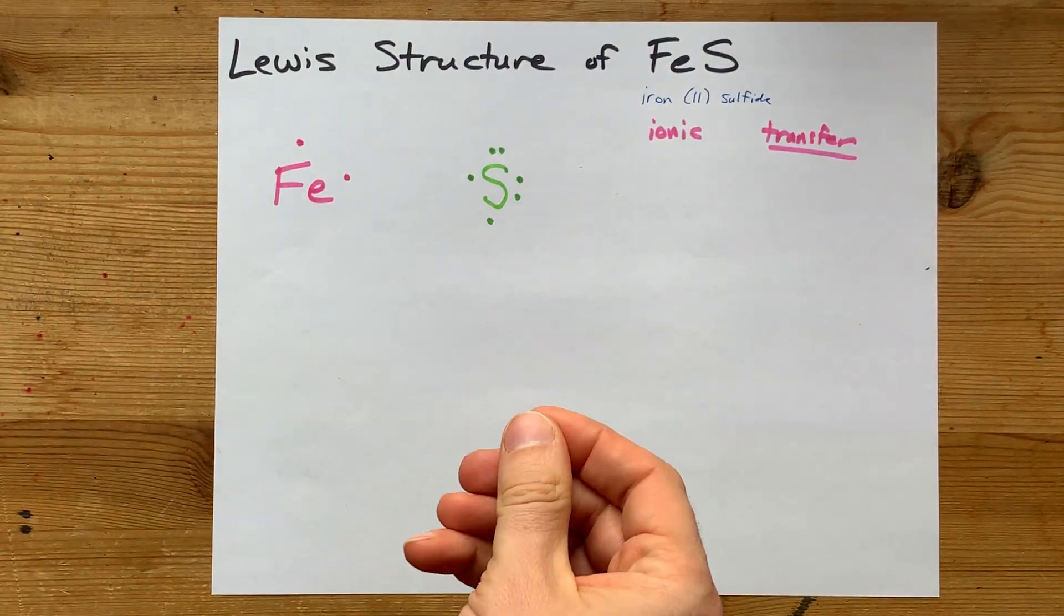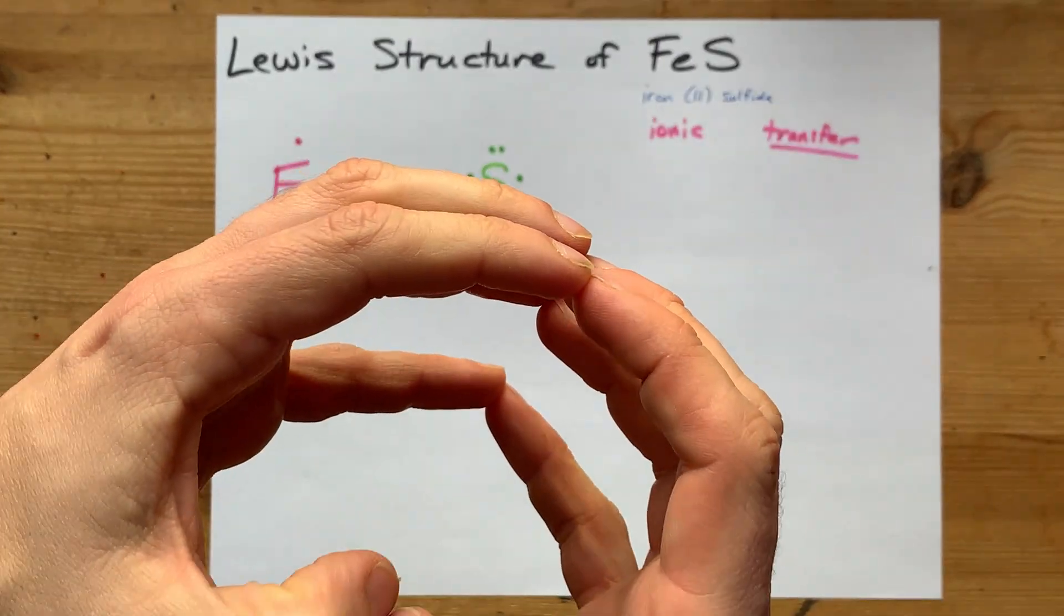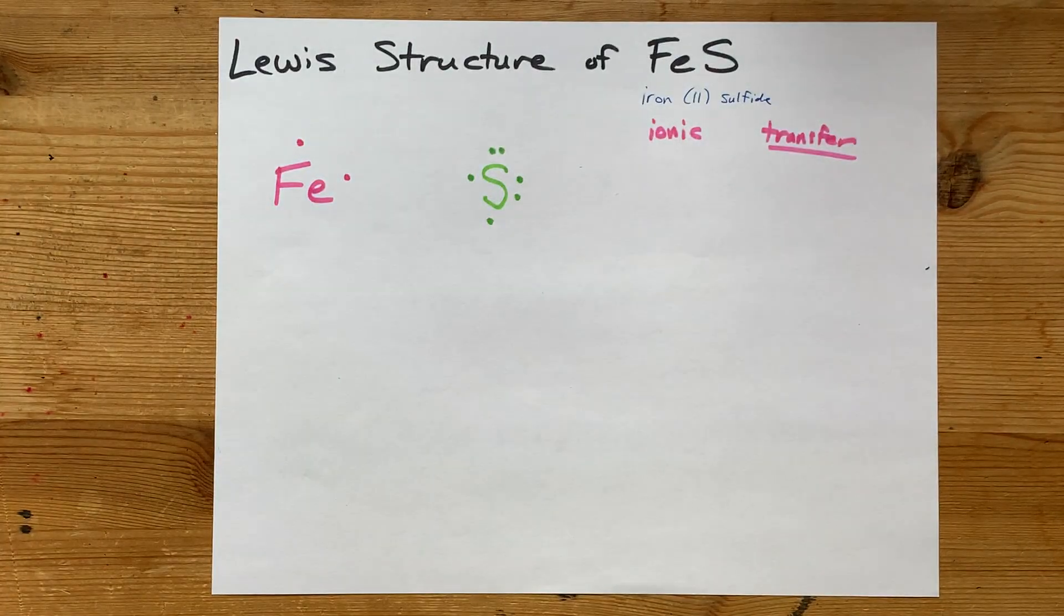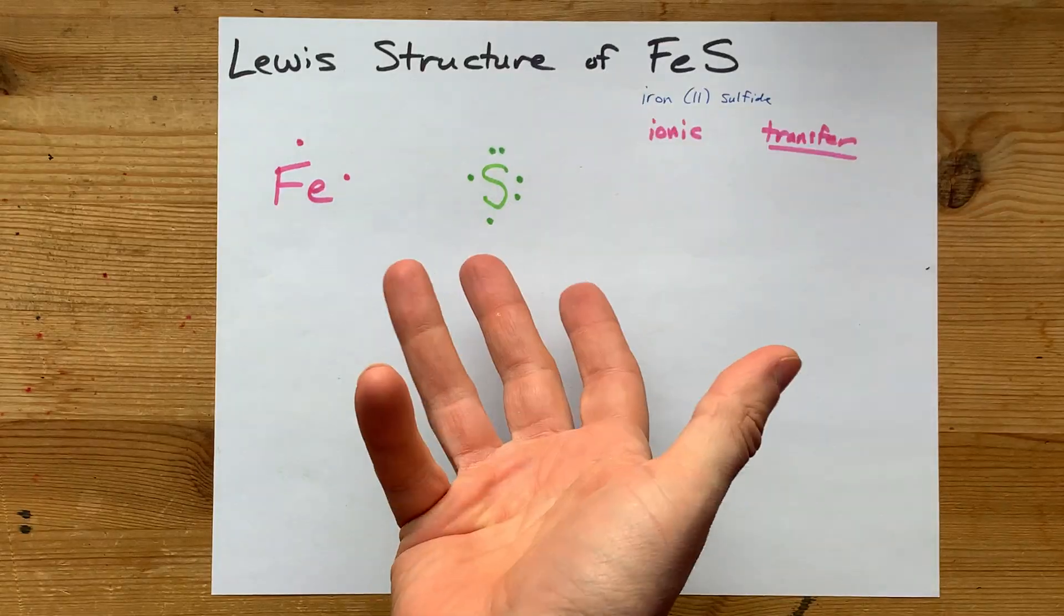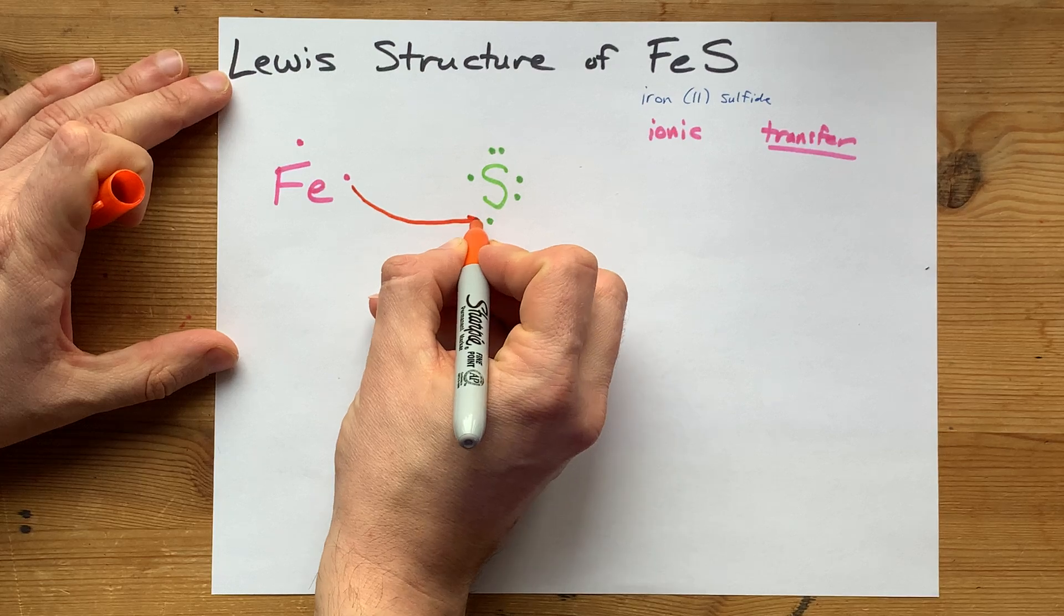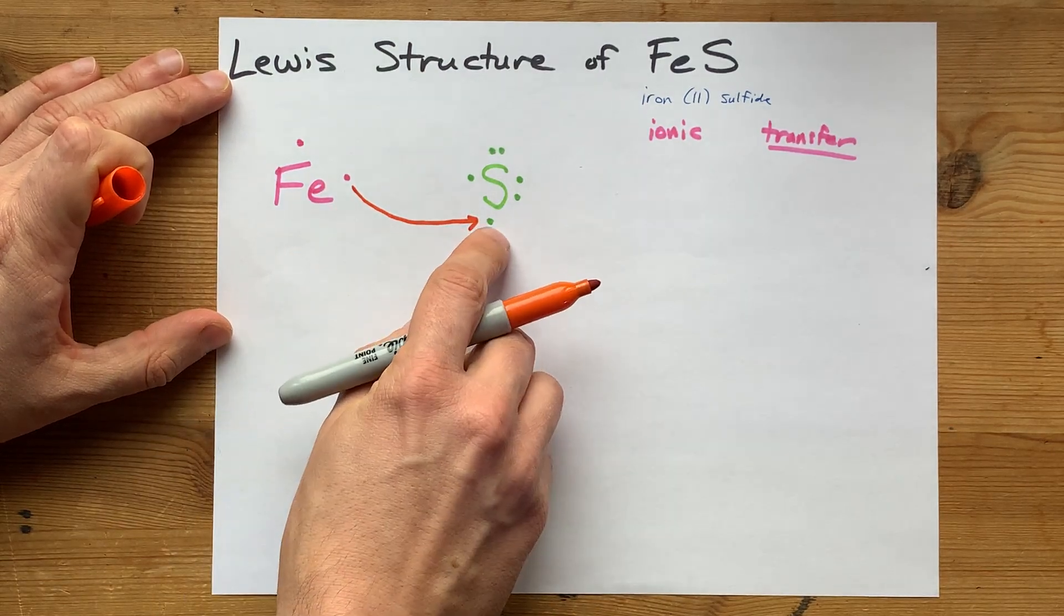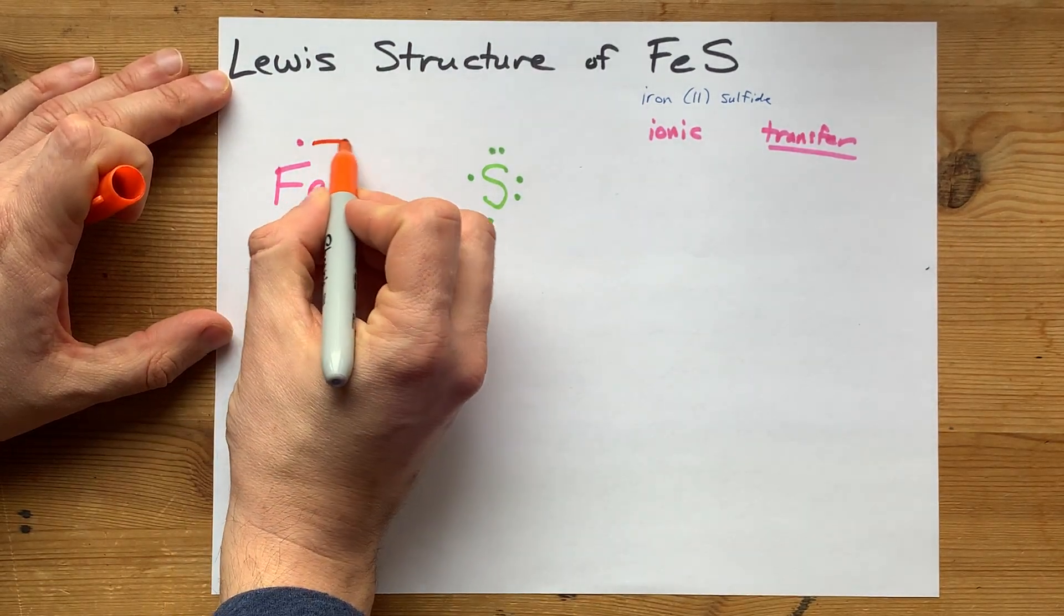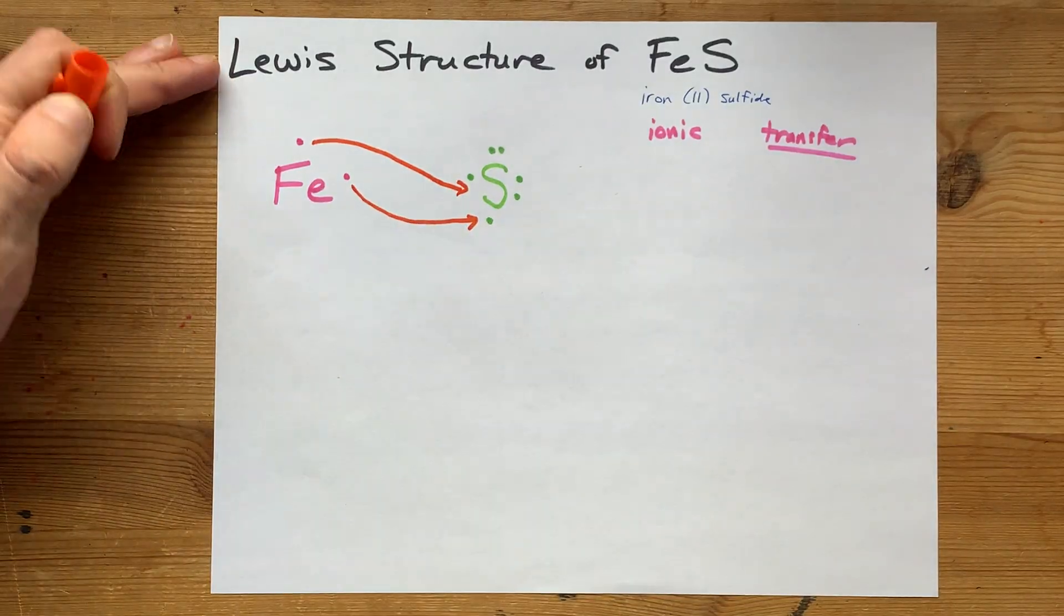And it, as a non-metal, wants to have a full outer shell of eight electrons. Where is it going to get the other two? Well, a metal will give away its electrons. In this case, it gives one electron away to pair up with that one, and its other electron away to pair up with that one.